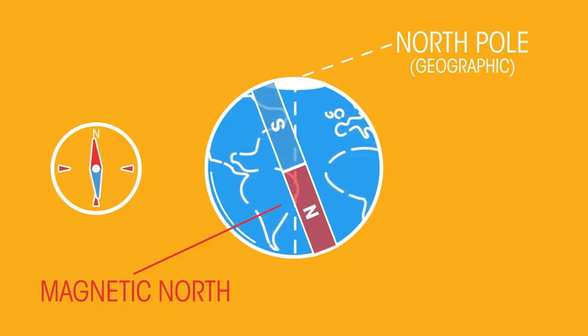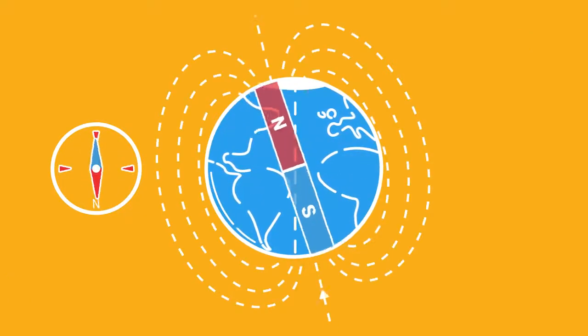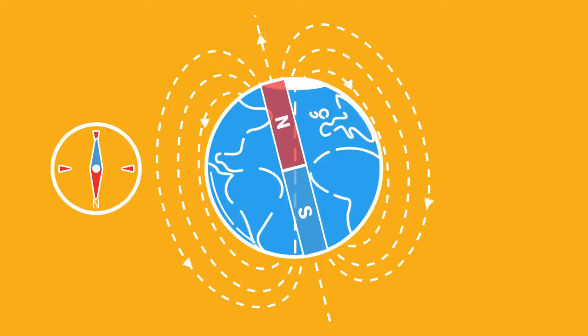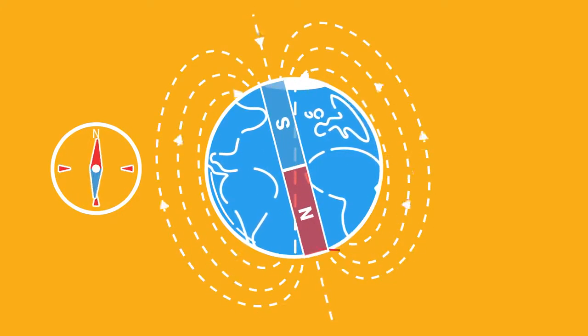However, unlike any ordinary magnet, the magnetic Earth's poles can switch. So the north pole becomes the south, and the south pole becomes the north. This pole reversal has actually happened many times before, and is likely to happen again soon.